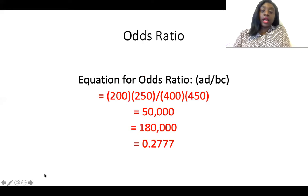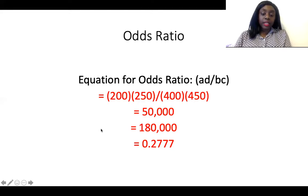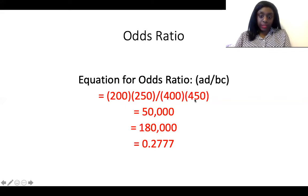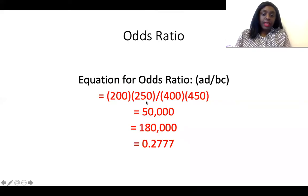Next, we calculate the odds ratio. The equation is the cross products of AD and BC, which was discussed in a prior mini lecture titled 'Odds Ratio' — I suggest watching that if you haven't. Plugging in from the contingency table: 200 times 250 (representing AD) divided by 400 times 450 (representing BC). That's 50,000 divided by 180,000, which gives us 0.277.